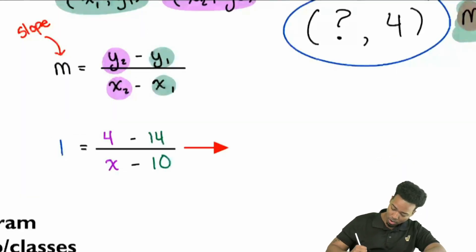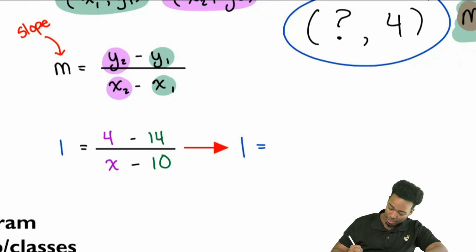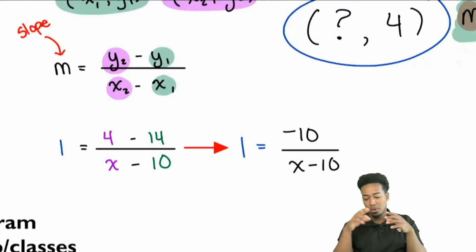So, this will end up becoming, again, a 1 equals. And so, again, 4 minus 14. That's the same thing as 14 minus 4, but it's in the negative direction because you're subtracting more than what you have. So, 4 minus 14, that's a difference of 10. But it'll be negative 10 because you're subtracting more than you have. And so, that'll be negative 10 up top. And on the bottom, we still have that x minus 10.